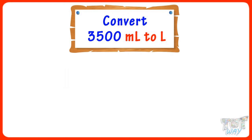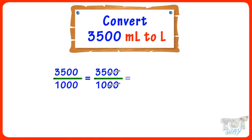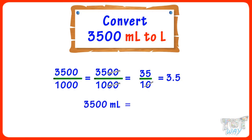3500 milliliters equals 3500 divided by 1000 liters. Cutting two zeros, we get 35 divided by 10. Cutting one zero and putting the decimal after one digit from the right, we get 3.5. So 3500 milliliters equals 3.5 liters.